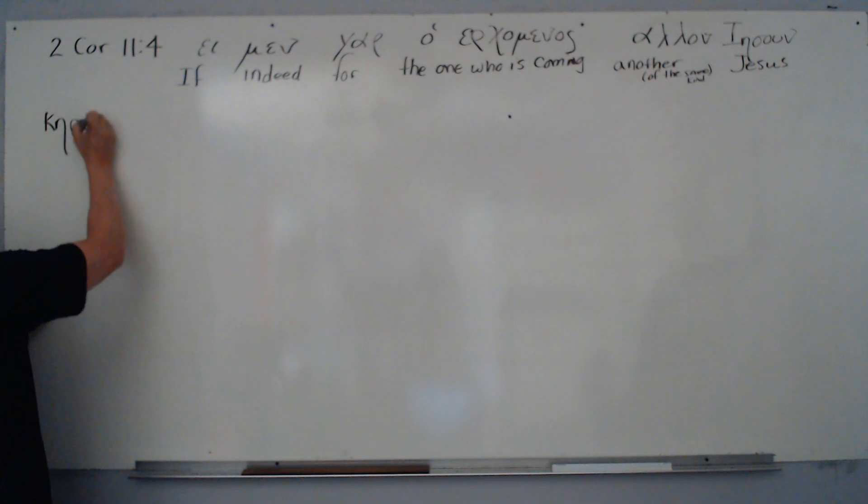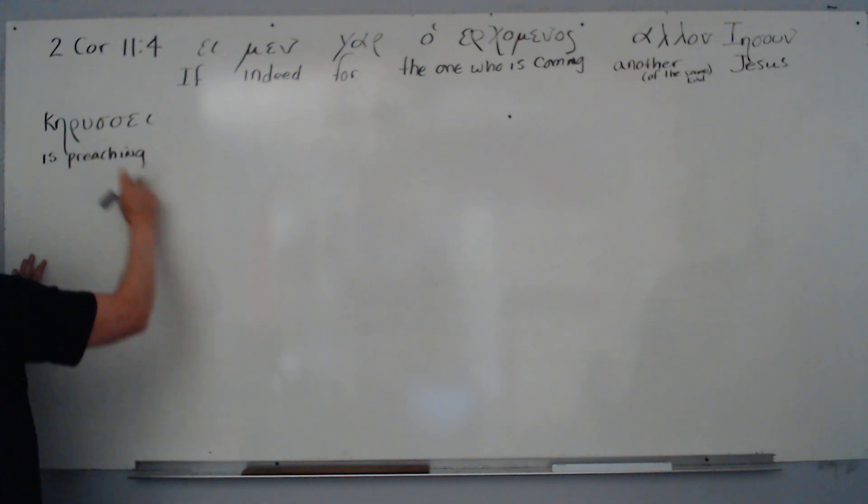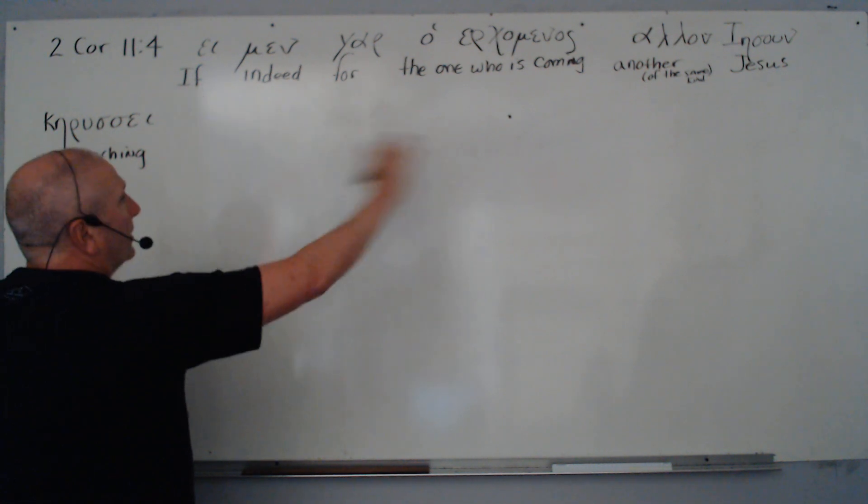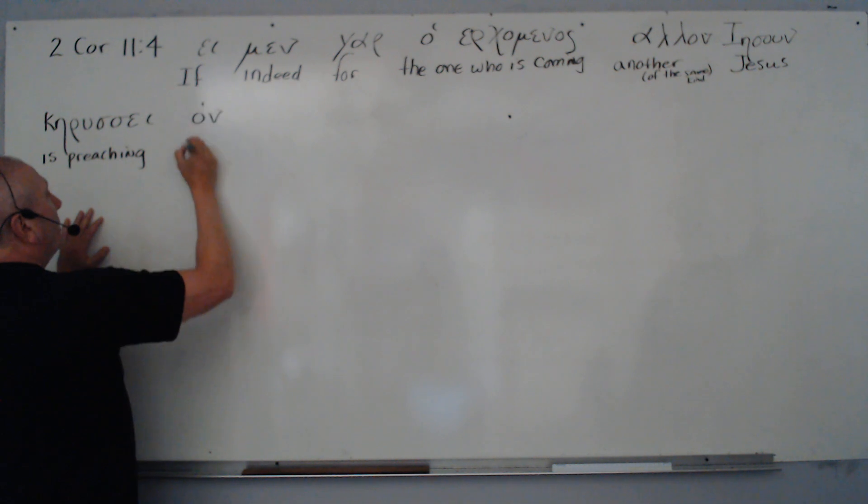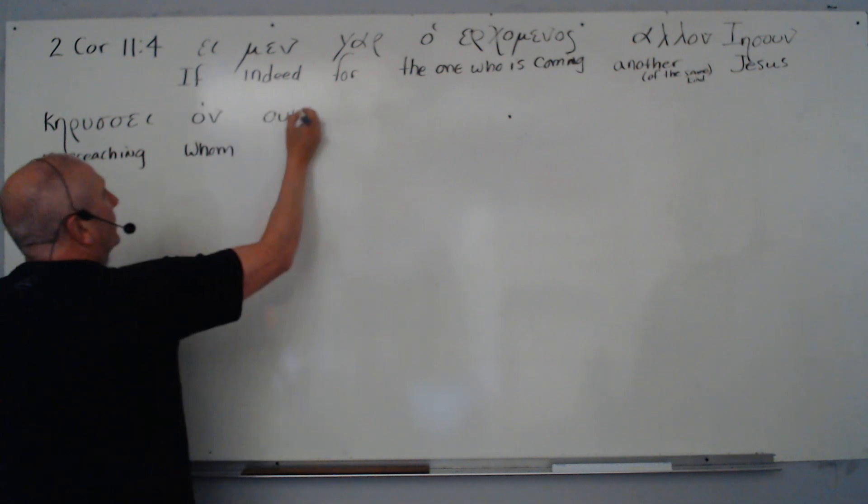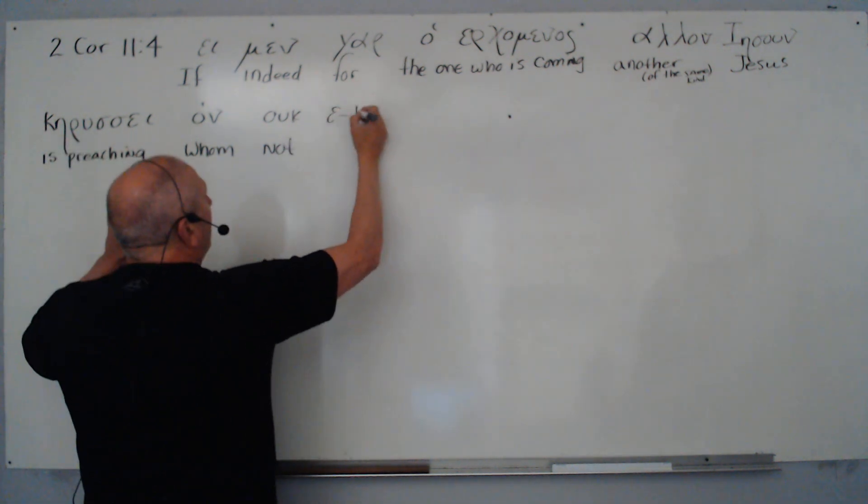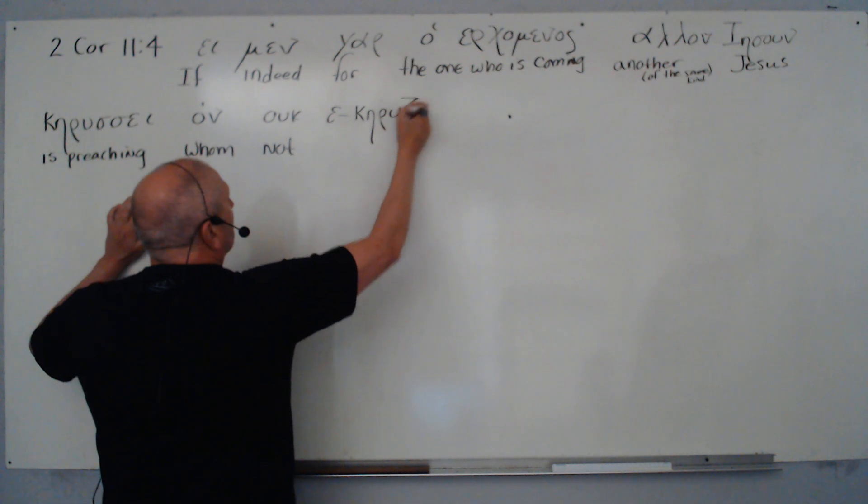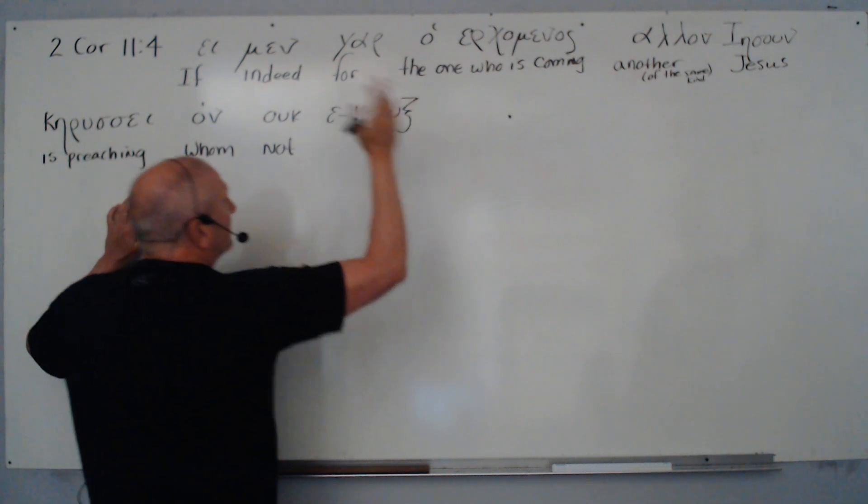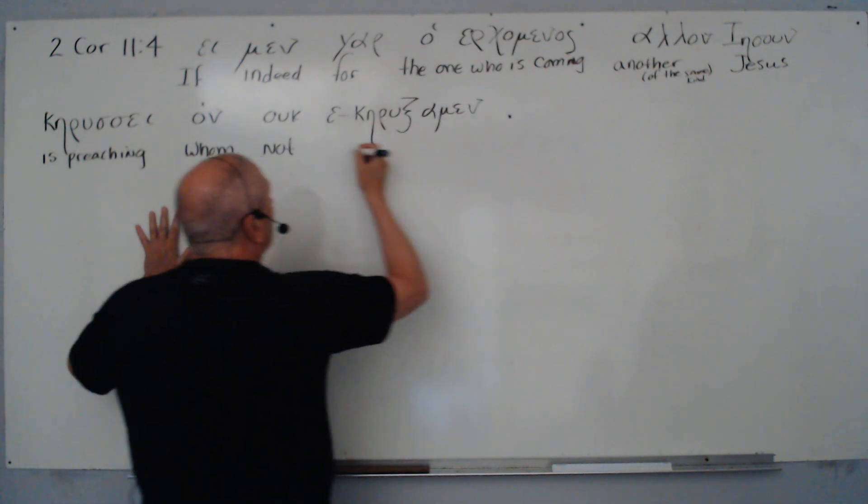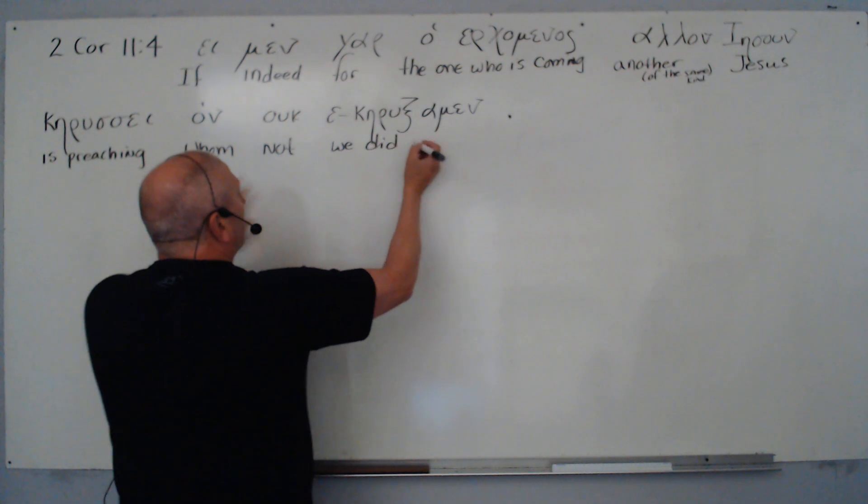He's saying, kerysso, third person singular present indicative active, is preaching. So if the one who is coming, from erchomai, deponent middle and passive in form but active in meaning, is preaching. Then we have allon Iesoun, another of the same kind, another, and of course emphasis of the same kind. That's what's alarming, so subtle about it. Whom we did not preach, first person plural.